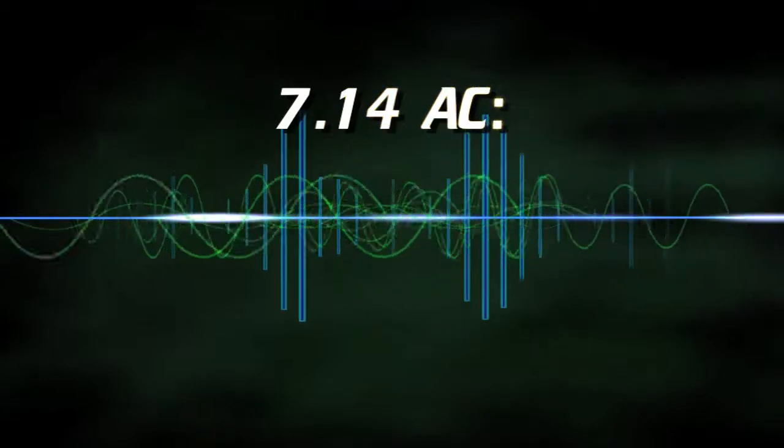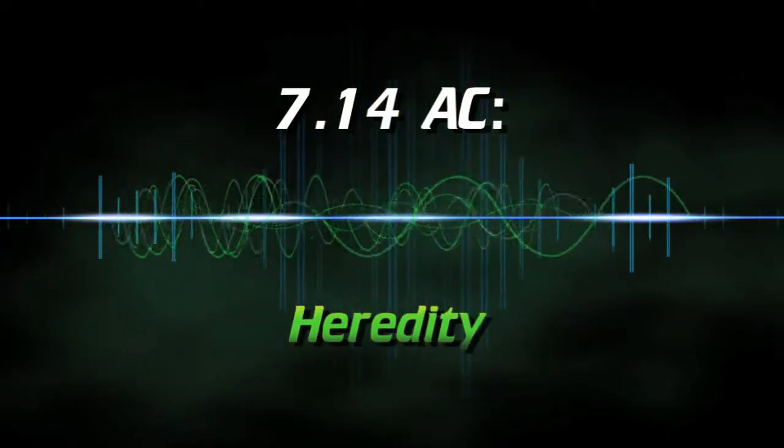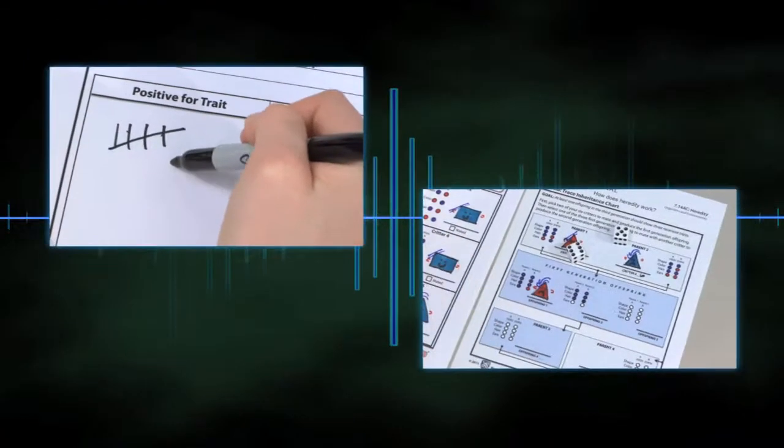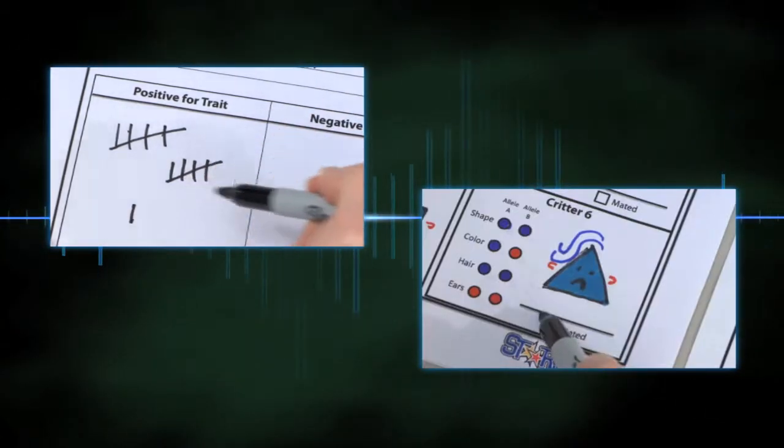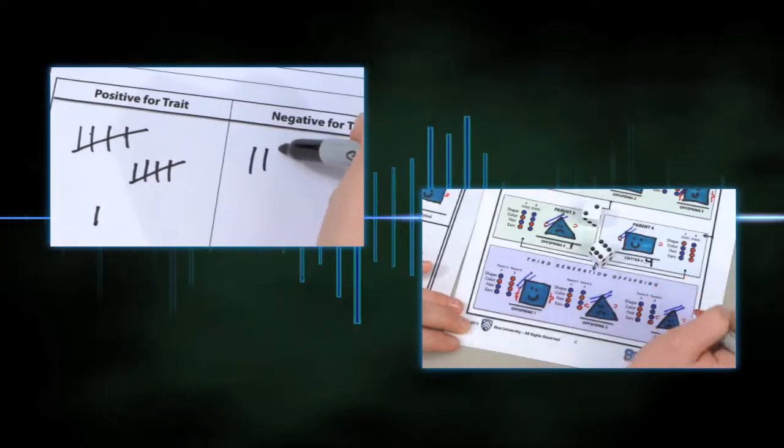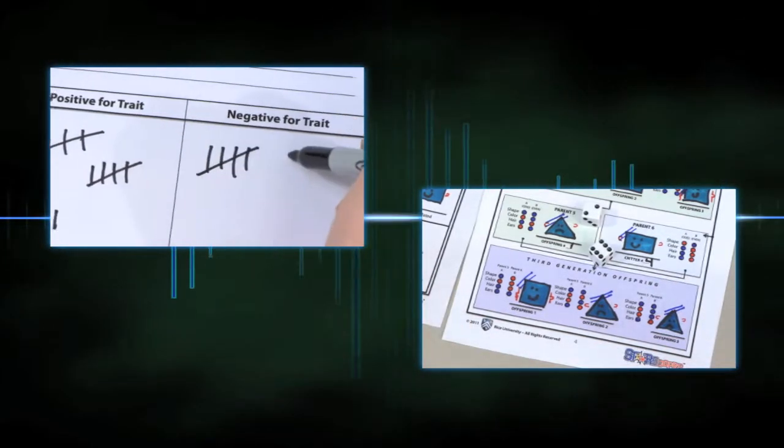7.14 A.C. Heredity. In this activity, students conduct a survey to investigate inheritable traits and create hypothetical critters to mate and produce three generations of offspring.